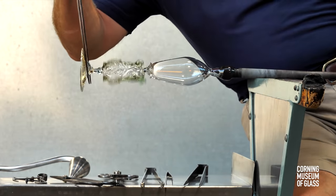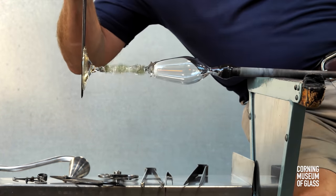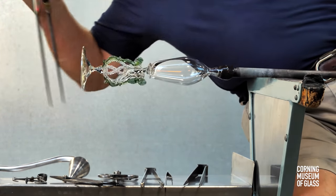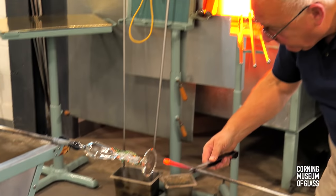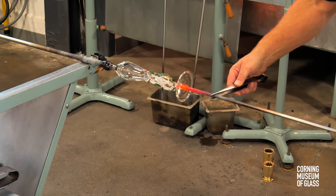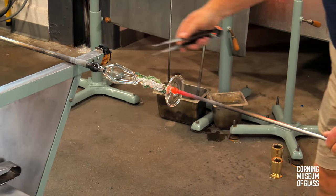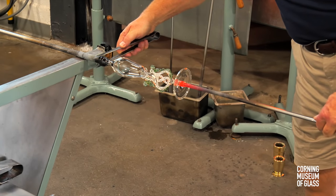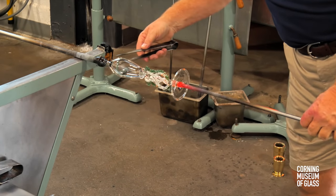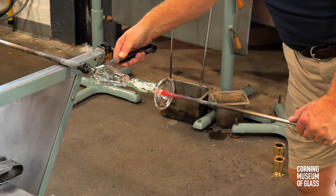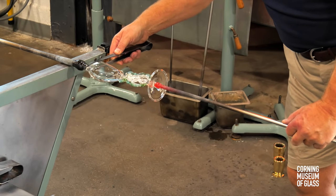Next comes the transfer to the punty. The tip of the glass on the end of the punty is blown, the constriction held with the pincers, the blowpipe tapped slightly, and the neck breaks.